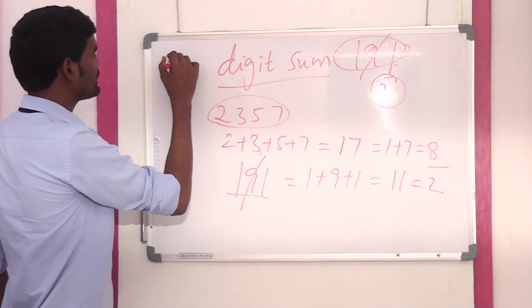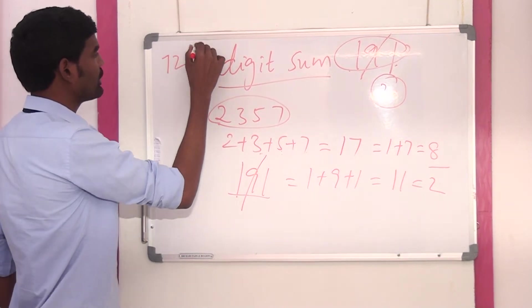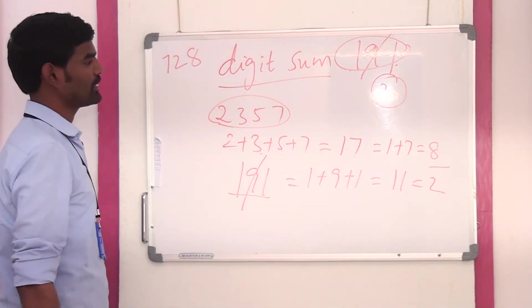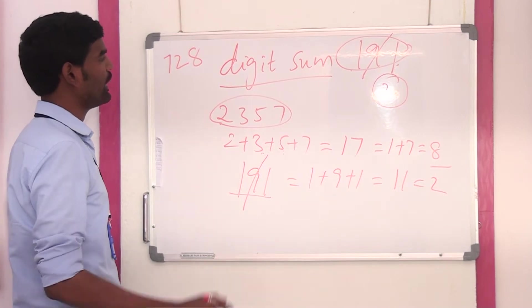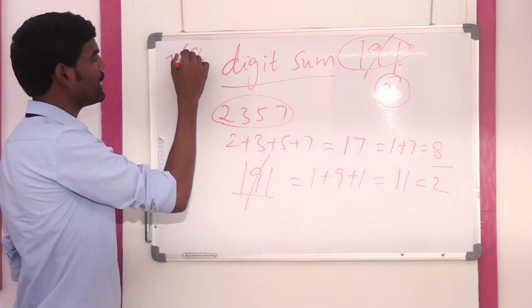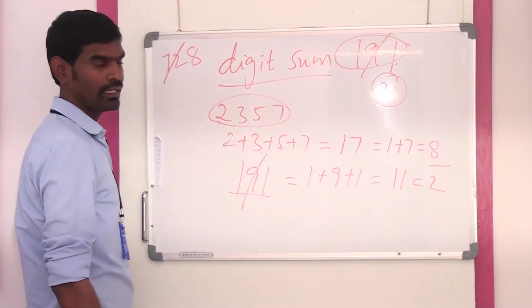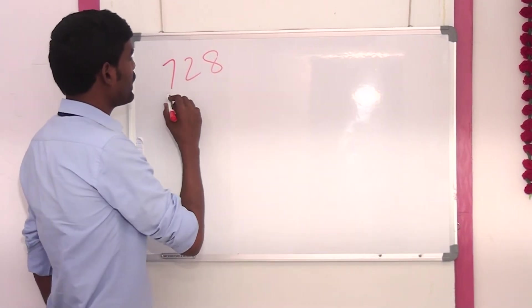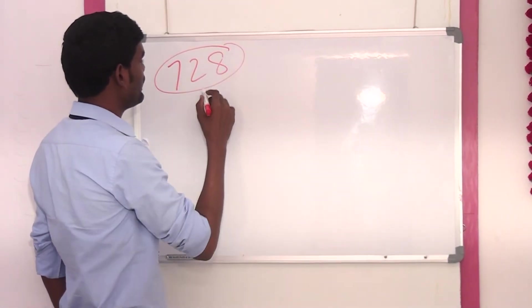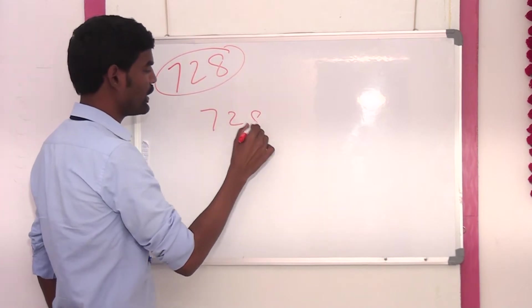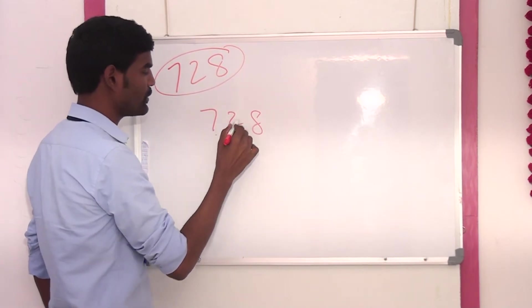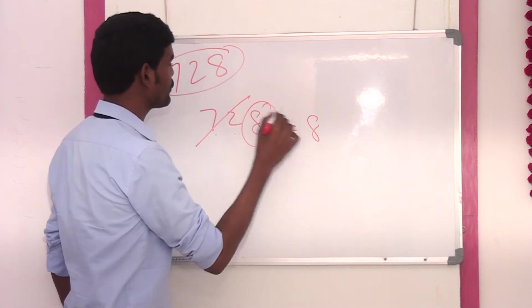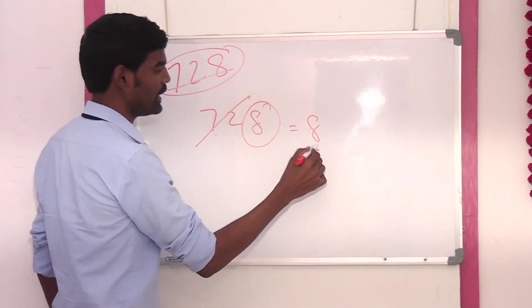For example, 728. If you want to find the digit sum of 728, so 7 plus 2 is 9 — we can cancel it. So the final digit sum of 728 is 8.